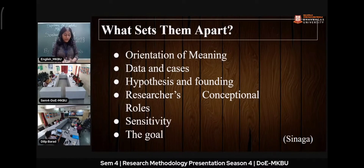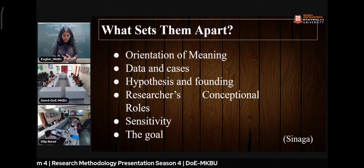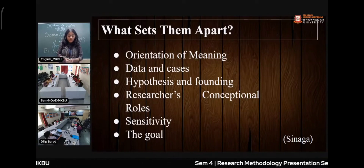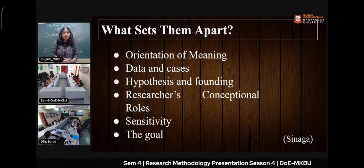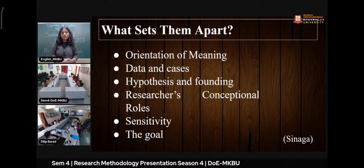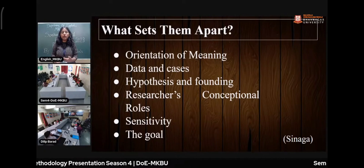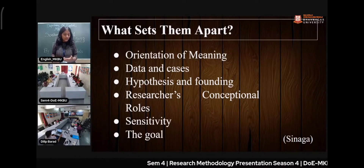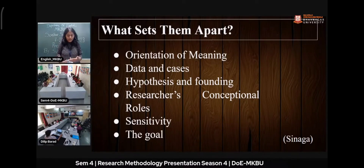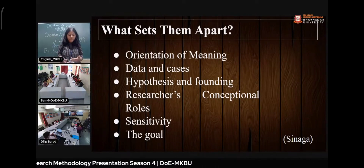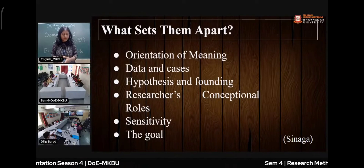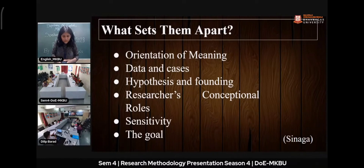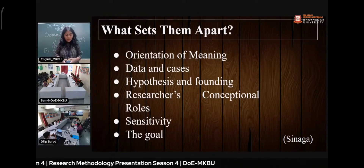Regarding hypothesis and findings: qualitative research involves new findings and is flexible — if a researcher finds a new way to look at the research while it is ongoing, they can adapt. Quantitative research, on the other hand, is more predetermined in its approach.